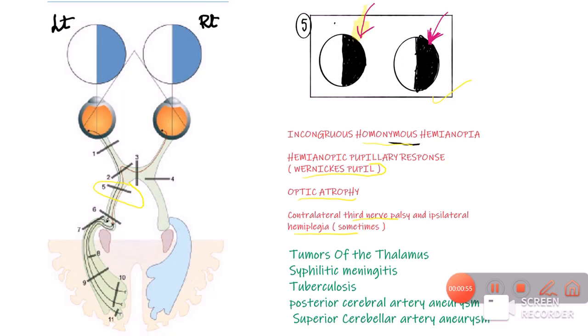Now what are the causes of this Wernicke hemianopic pupil? What are the lesions which can actually affect the optic tract? It could be tumors which are coming from the thalamus which are present right above the midbrain. The thalamus is situated right above the midbrain and over there we have the optic tract. So tumors of the thalamus along with syphilis, tuberculosis, posterior cerebral artery aneurysms and superior cerebellar artery aneurysms. These structures are present in close relationship to our optic tract and therefore the lesions can cause defects of the optic tract and give us the Wernicke's pupil.